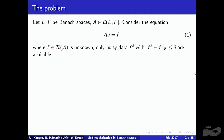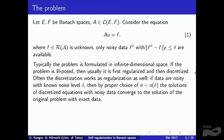The problem is set up in Banach spaces, so E and F are Banach spaces, A is a linear continuous operator from E to F, and we consider the equation Au equals F. F is in the range of A but is unknown, and we only know the noisy data F_delta, and the noise level is also known. Typically the former problem is originally formulated in infinite-dimensional space, and if the problem is ill-posed, then usually it is first regularized and then discretized, but often the discretization also works as regularization as well.